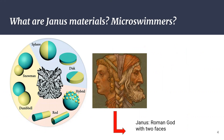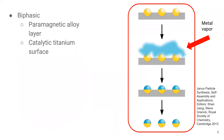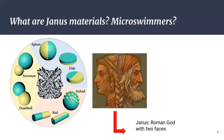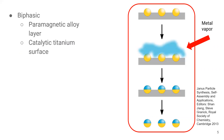Janus particles can have all kinds of weird geometries, but for our microswimmers we want a sphere. Through physical vapor deposition, we take our spherical seed particles — they get embedded close together on a substrate, touching each other — so when we deposit metal vapor on top, only the top half gets covered. That gives us the biphasic structure we want. We end up with particles that have metal on one side and bare silicon dioxide on the other. We actually layer it twice: a paramagnetic alloy layer, and more importantly a catalytic titanium surface.